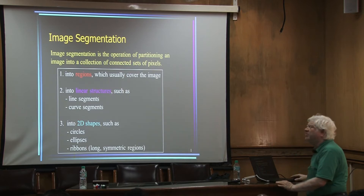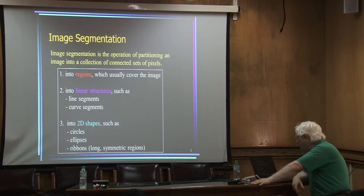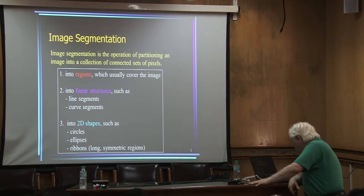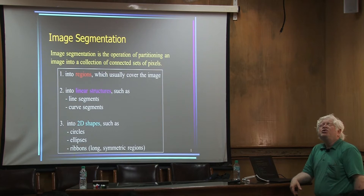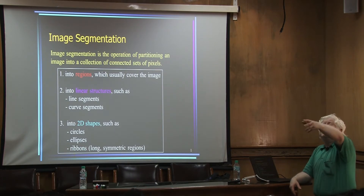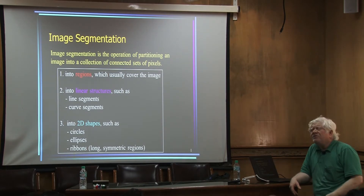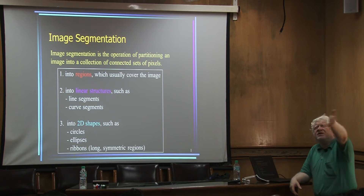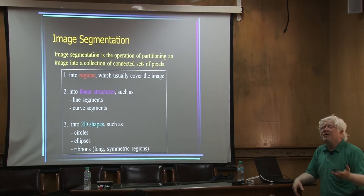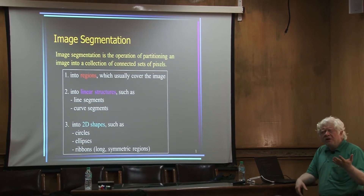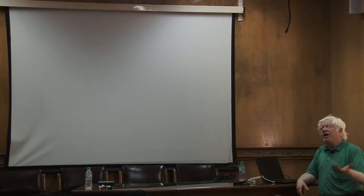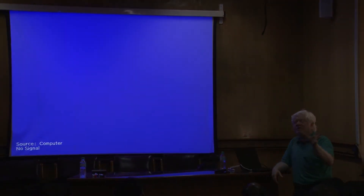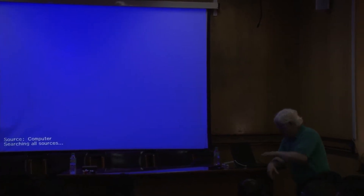This is the segmentation problem in its various manifestations. One is about finding regions in an image; the other is about finding lines in an image, which is sufficiently interesting in its own right. In human-made environments like this room, you can look around and see how many straight lines there are — there are lots of natural straight lines to be found, very useful for moving around. Of course, you go out into open space and you hardly see any straight lines in natural environments. The third manifestation is looking for shapes of a specific kind.